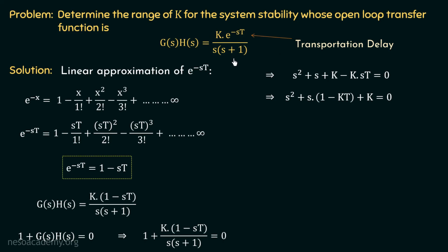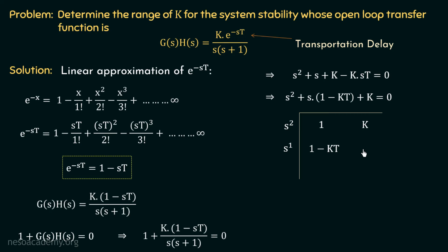Let us now form the Routh array for this characteristic equation. We will have the highest power of s and subsequent powers, and we can fill the first two rows directly using the coefficients of the characteristic equation. The entries are: s² row: 1 and k; s¹ row: 1 minus kt and 0, since no further coefficients remain. Moving to the last row, the s⁰ row: since the second entry in the s¹ row is 0, we can directly copy k into this row. The last term of the Routh array is the constant term of the characteristic equation, which equals k.